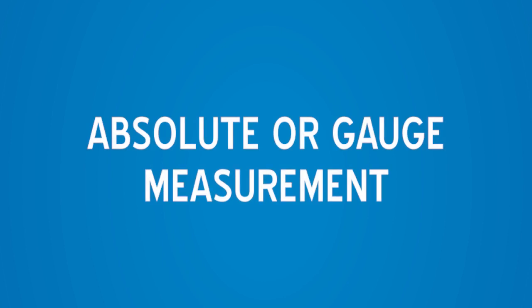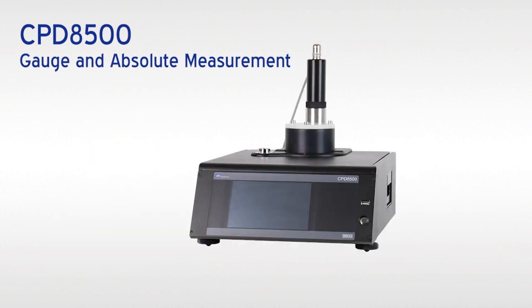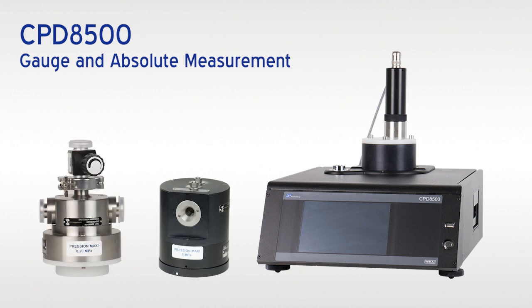The CPD 8500 can operate in absolute or gauge mode by switching the reference pressure and measuring heads. One base can adapt to a variety of measuring head ranges to allow different pressure modes in one instrument.